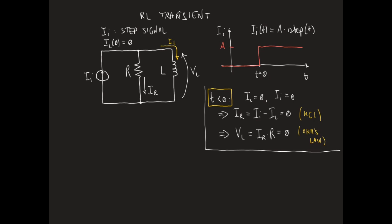For T equal to or larger than zero, Ii is equal to A. Kirchhoff's law for node A in the circuit can be written as IR plus IL is equal to Ii, or simply A.